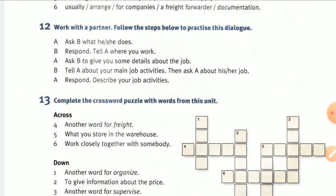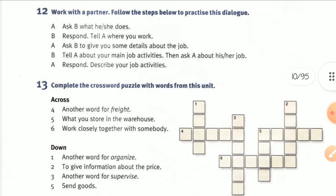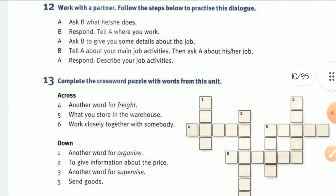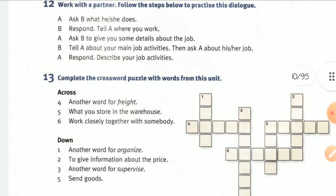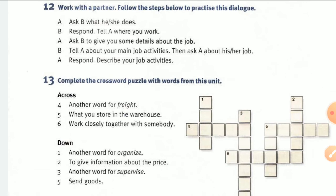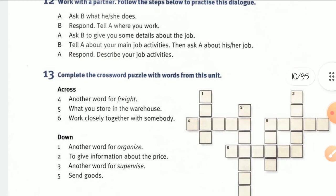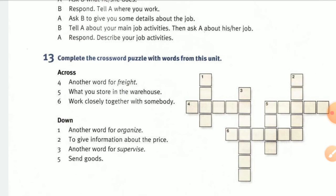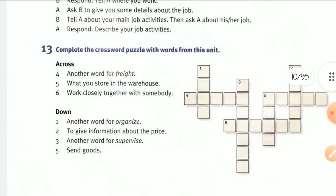Now we reach exercise twelve: work with a partner and follow the steps to practice a dialogue. A asks B what he or she does — talking about jobs, like 'What do you do?' B responds, saying where they work, and asks B to give some details about the job — responsibilities and activity areas. Then B tells A about main job activities and asks A about his or her job in turn. Finally, A responds by describing job activities.